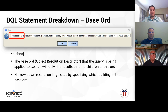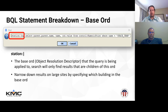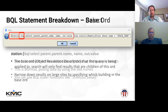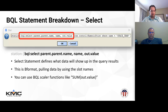The first part of the statement is the base ORD that the query is applied to - your search results will only be components that are children of that base ORD. An ORD is an Object Resolution Descriptor - basically the Niagara URL for objects inside the station. If you've got a large university or multiple buildings, you can really define down where you want to search in that base ORD. The next part is the SELECT portion, where you define what data you'll get - in this example, parent name, name, and out value, which will be the columns in the results table.